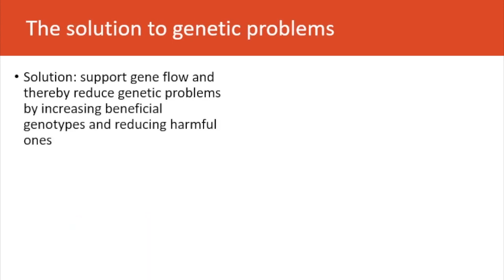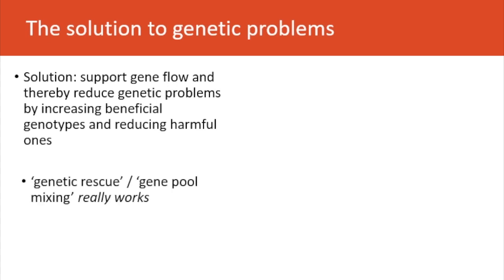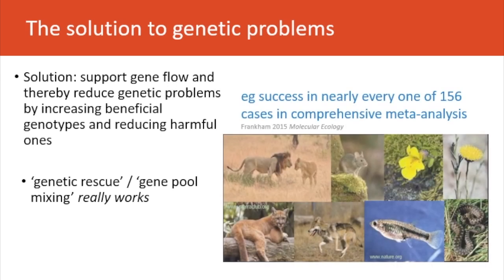The solution to genetic problems is to support gene flow, and by doing so, reduce genetic problems by increasing beneficial genotypes and reducing harmful ones. This genetic rescue or gene pool mixing really works. A good example is a meta-analysis of 156 suitable studies — virtually every one gave major fitness benefits from genetic rescue.